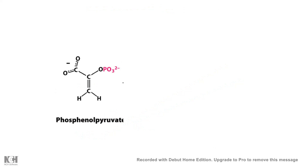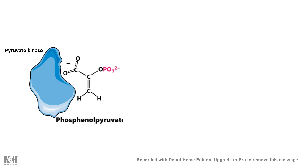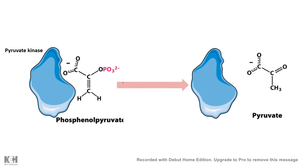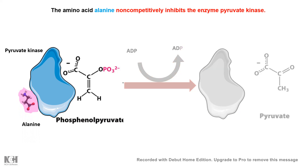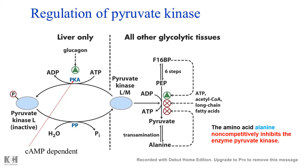As an example, phosphoenolpyruvate is converted to pyruvate by the enzyme pyruvate kinase — the last substrate-level phosphorylation step in glycolysis — where ADP gets converted to ATP. The amino acid alanine acts as a non-competitive inhibitor of pyruvate kinase, thereby regulating glycolytic flux. This shows how non-competitive inhibition can regulate glycolysis.